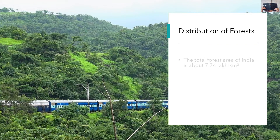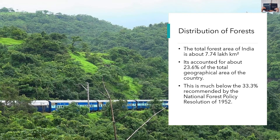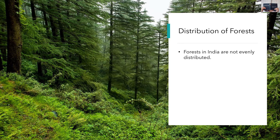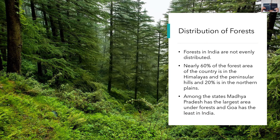Distribution of Forest: The total forest area of India is about 7.74 lakh square kilometers, accounting for about 23.6% of the total geographical area of the country. This is much below the 33.3% recommended by the National Forest Policy Resolution of 1952, which lays emphasis on sustainable forest management to conserve and expand forest reserves and meet the needs of local people. It is even below the world average of 29.5%. Forests in India are not evenly distributed — nearly 60% of the forest area is in the Himalayan region and peninsular hills, and 20% is in the northern plains. Madhya Pradesh has the largest forest cover and Goa has the least.